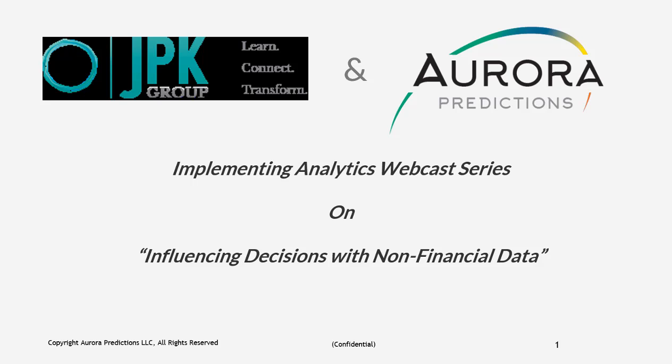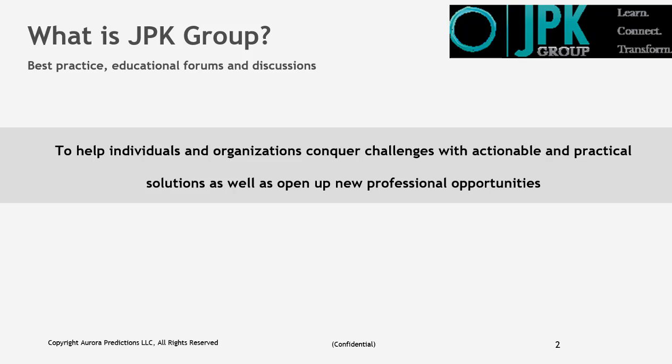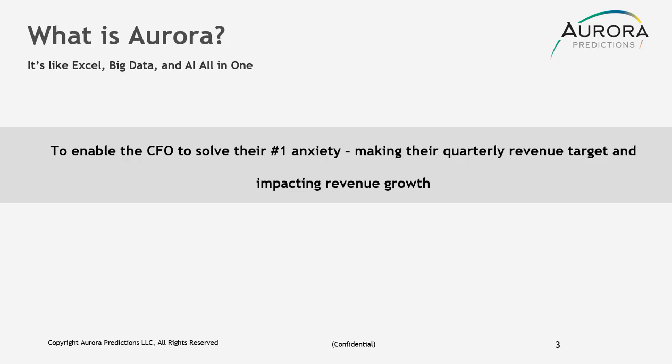Welcome to the Implementing Analytics Webcast Series, this one on Influencing Decisions with Non-Financial Data. This is brought to you by the JPK Group and Aurora Predictions. JPK provides best practice educational forums and discussions to help individuals and organizations conquer challenges with actionable and practical solutions, as well as open up new professional opportunities. Aurora is like Excel, Big Data, and Artificial Intelligence all in one, to enable the CFO to solve their number one anxiety: making their quarterly revenue targets and impacting revenue growth.